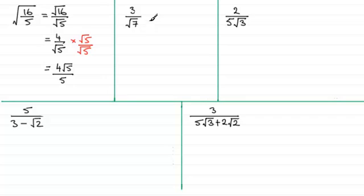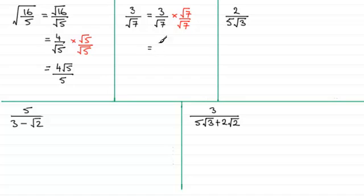So how did you get on? Well, let's copy this down as 3 over the root of 7. To do this one we need to get rid of that root 7, so we need to times it by 1, and we create that 1 by multiplying top and bottom by root 7. What we get then is 3 times root 7, which is 3 root 7, divided by root 7 times root 7, which is going to be 7. So the answer is 3 root 7 over 7.